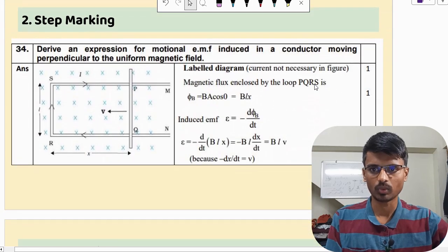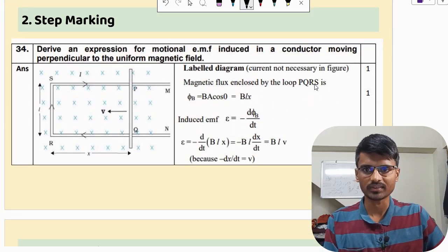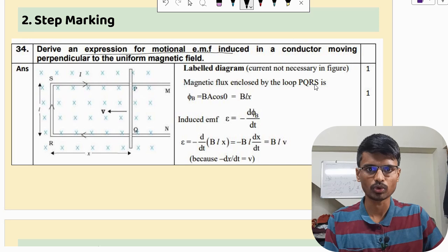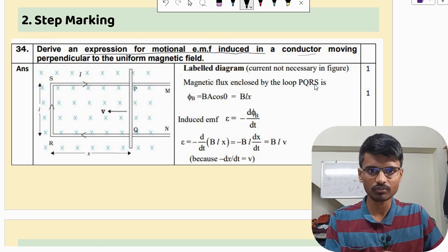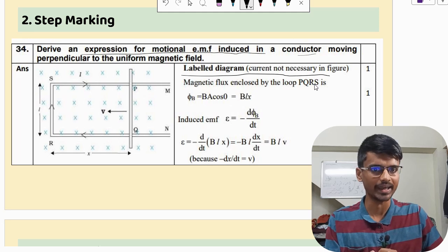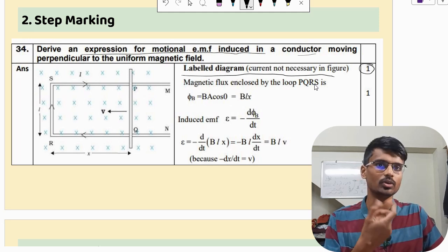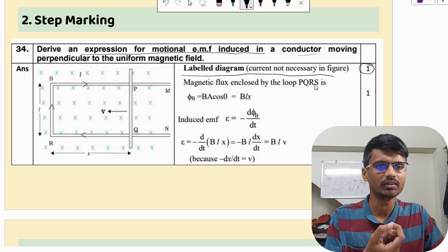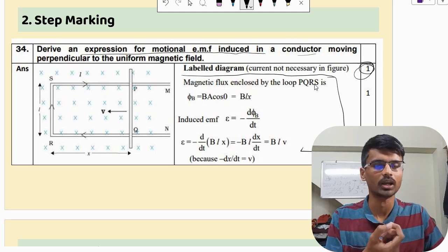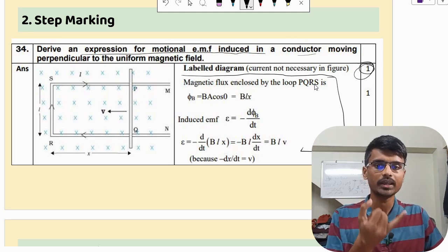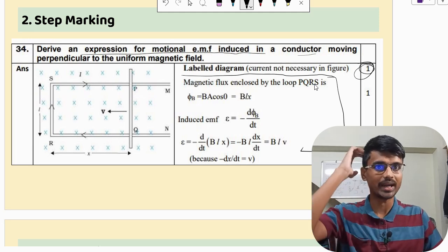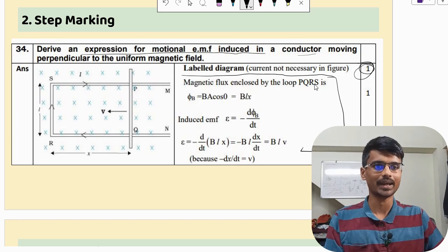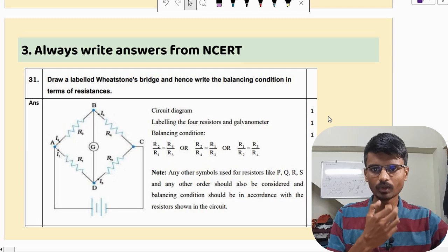Let us look at one more thing. This is a physics question. Here they are asking you to derive the expression for motional EMF induced in a conductor. First thing is, if you have done a proper labeled diagram, then one mark is fixed. You are definitely going to get one mark. Even if you are not going to do all these things, you are going to get one mark. Always have the diagrams properly written and try to write your solution step by step, so that it becomes easy for the teacher who is correcting it and you can easily get the marks.